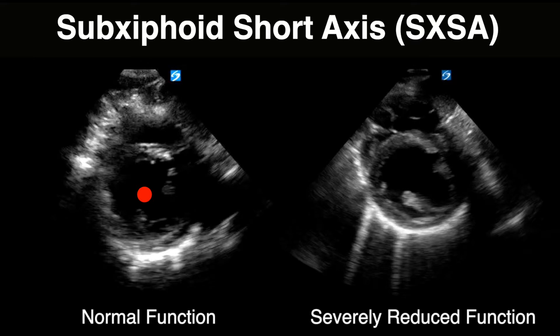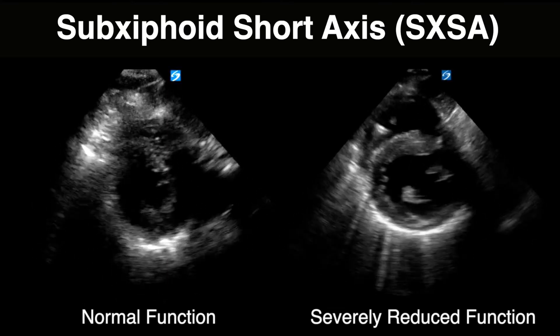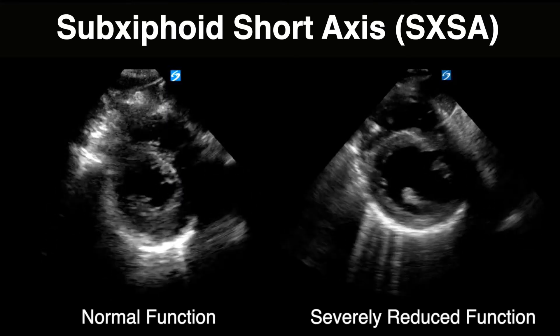The subxiphoid short axis view uses the same red dot concept — watching how much the LV walls collapse toward the center. This is often a great view in COPD patients or those with lung disease where the parasternal short axis is difficult to obtain. Comparing normal versus severely reduced EF here: normal function shows good wall collapse, while the severely reduced example shows the walls barely moving toward each other.